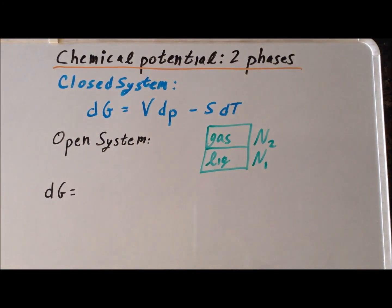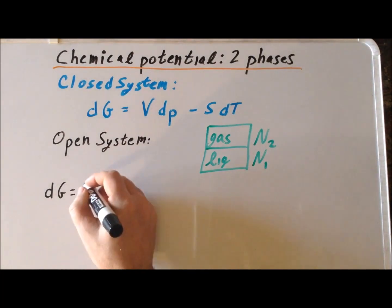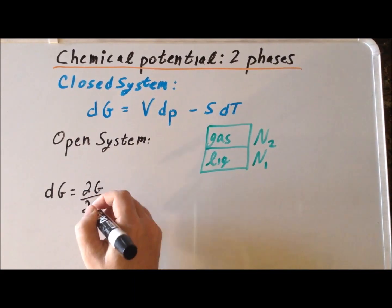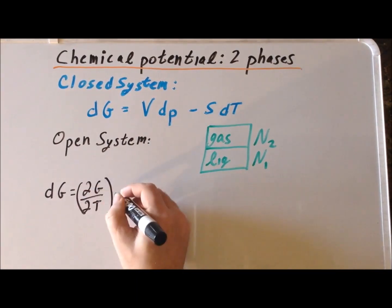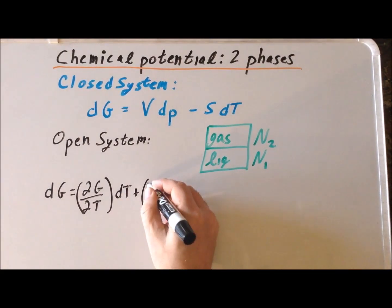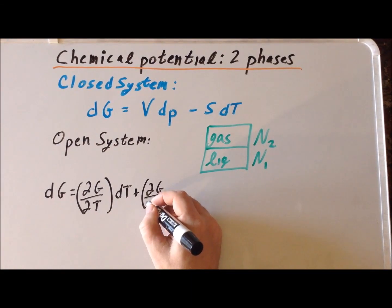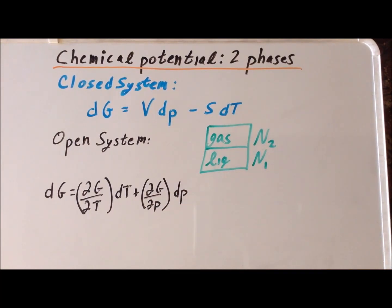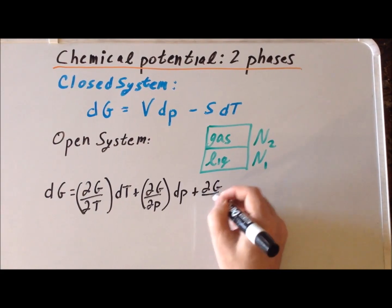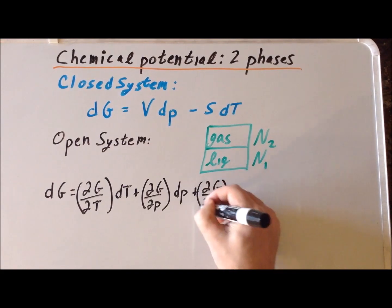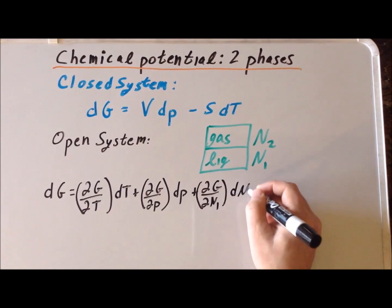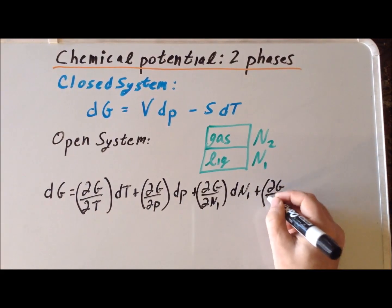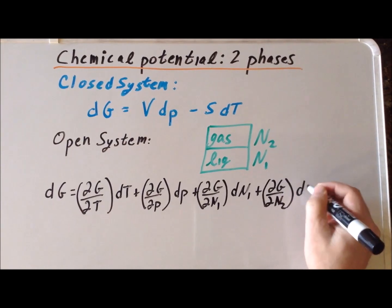We will use the fact that the Gibbs free energy is a state function to write it in terms of partial derivatives. So dG is equal to the partial derivative with respect to temperature times dT, plus the partial derivative of the Gibbs energy with respect to pressure times dP, plus the partial derivative with respect to n1 times dn1, plus the partial derivative of the Gibbs energy with respect to n2 times dn2.